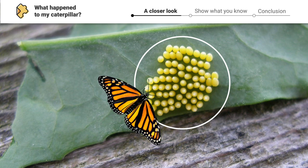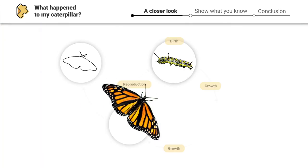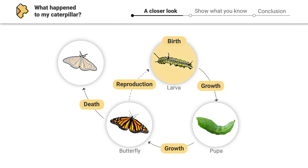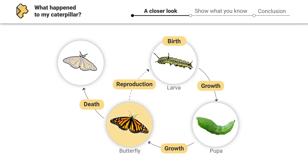When these eggs hatch, what will they look like? Well, remember, butterflies are just adult caterpillars. So a butterfly's eggs will hatch into caterpillars. So what happened to my caterpillar? All that happened was it grew up. The butterfly I found in my cage was just the adult version of a caterpillar. As caterpillars grow, they enter a chrysalis, where they go through metamorphosis and transform into butterflies.